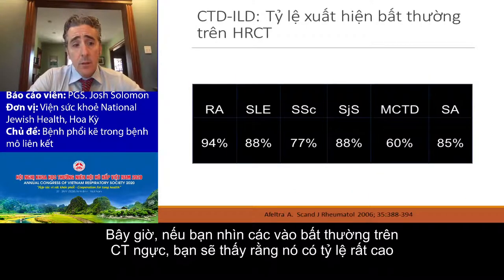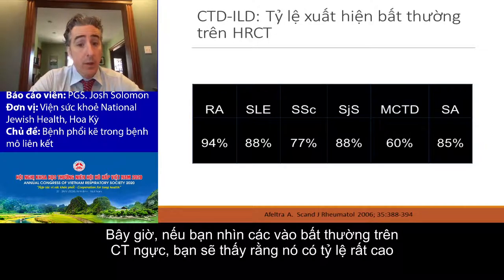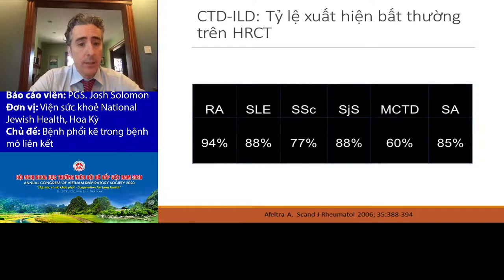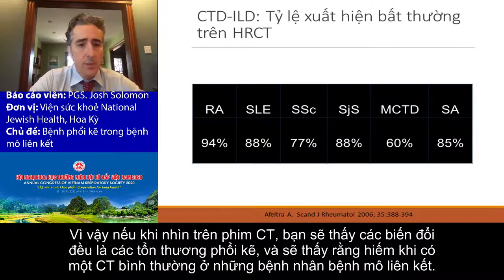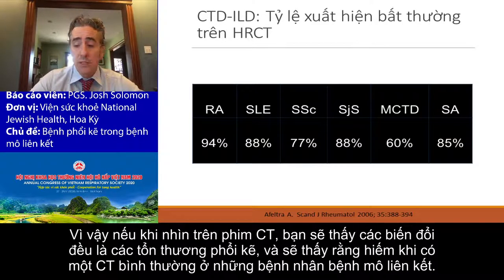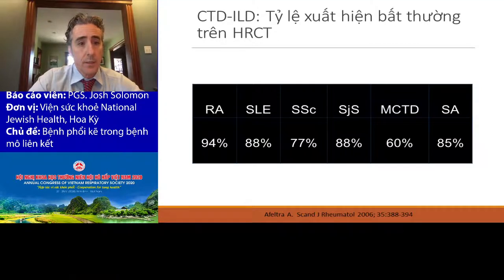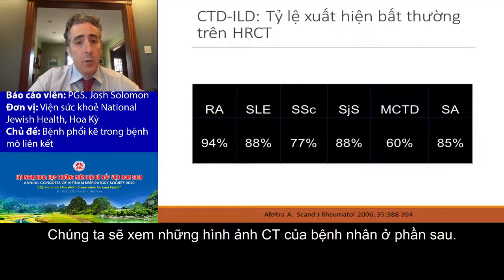If you look at the amount of chest CT scan abnormalities in these diseases, you'll see that it's fairly high. If you look at all changes on a CT — interstitial lung disease, airways disease, pleural disease — it's rare to have a normal CT in patients with connective tissue related disease. So we're going to see something if we scan these people.